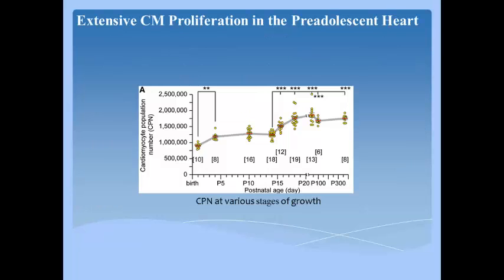Authors evaluated total cardiomyocyte number, that is CPN, in ventricular myocardium by enzymatic disaggregation and direct cell counting. Estimates of total cardiomyocyte numbers identify two distinct increases in CPN: a 40% increase between P1 and P4, and a further 40% increase between P14 and P18. A total of 22% of the post-P14 CPN increase occurred by 4 p.m. on P15, with no further change between P18 and P325.